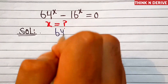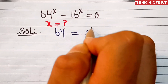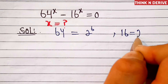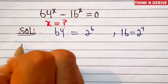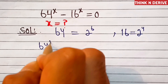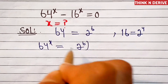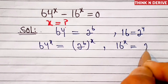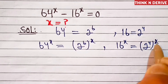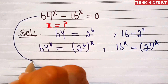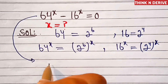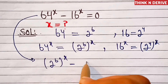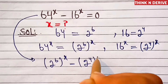We know 64 is equal to 2 power 6 and 16 is equal to 2 power 4. That means 64 power x can be written as 2 power 6 whole power x, and 16 power x can be written as 2 power 4 whole power x. That means this can be written as 2 power (6x) minus 2 power (4x) equal to 0.